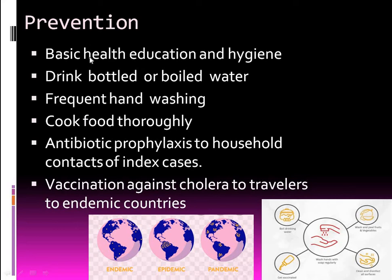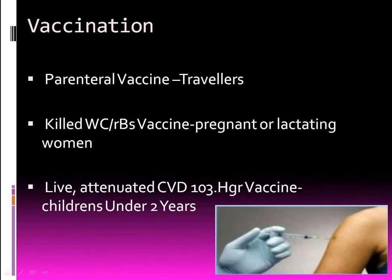Prevention: basic health education, proper hygiene, drinking boiled water, frequent handwashing, thoroughly cooking food, and antibiotic prophylaxis for index cases. Vaccination against cholera is useful for travelers. Vaccines include: parenteral vaccine for travelers, killed vaccine for pregnant or lactating women, and live attenuated vaccine for children under two years.